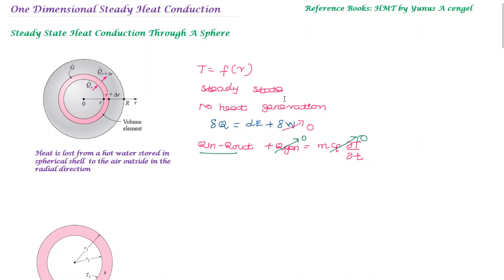With the steady-state assumption, the rate of change of internal energy is zero. With no heat generation, those terms are eliminated. The remaining simplified result is Q_in equals Q_out — the rate of heat transfer entering equals the rate leaving. This equation is very useful for our derivation.